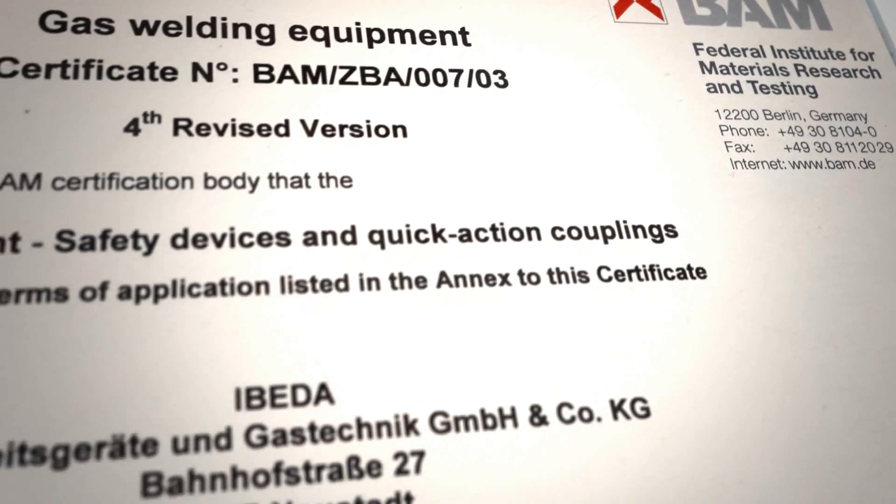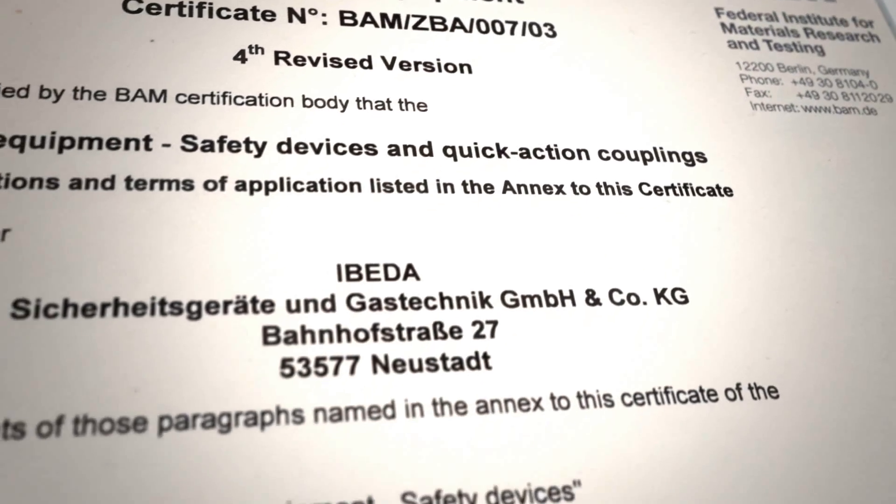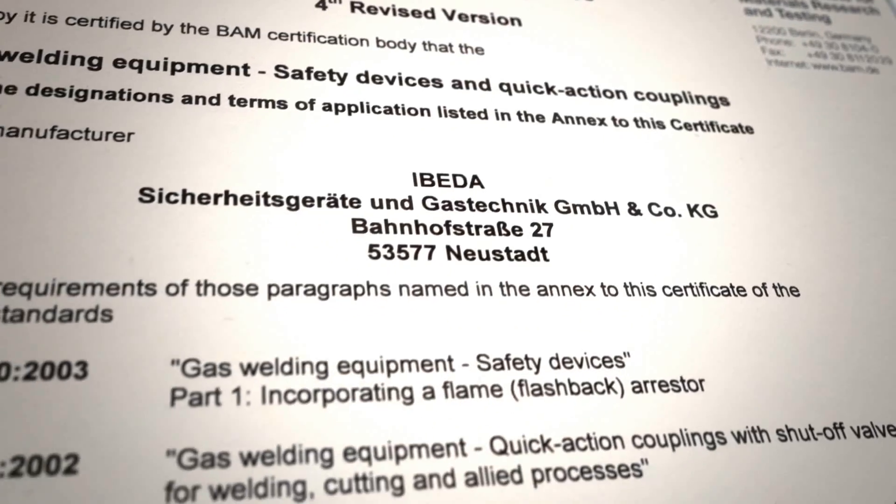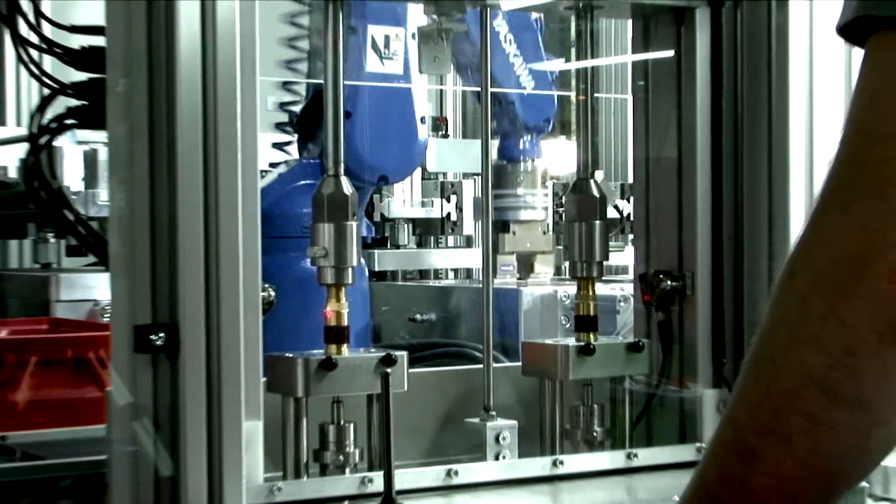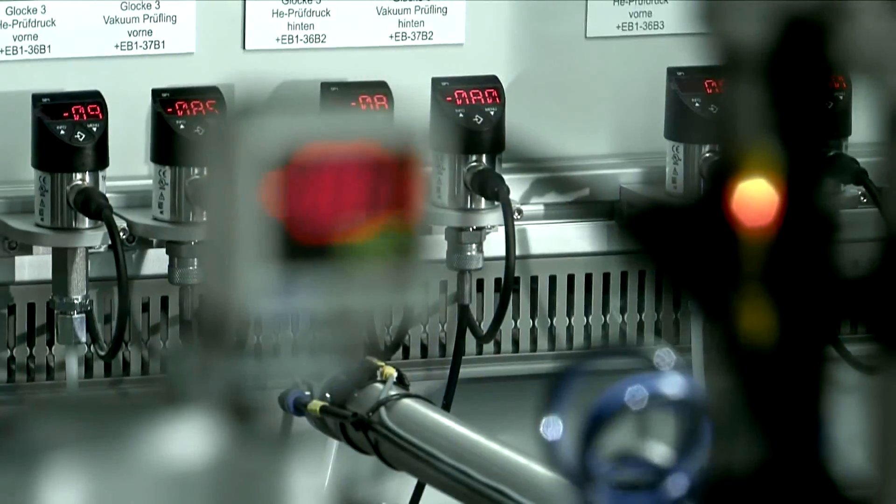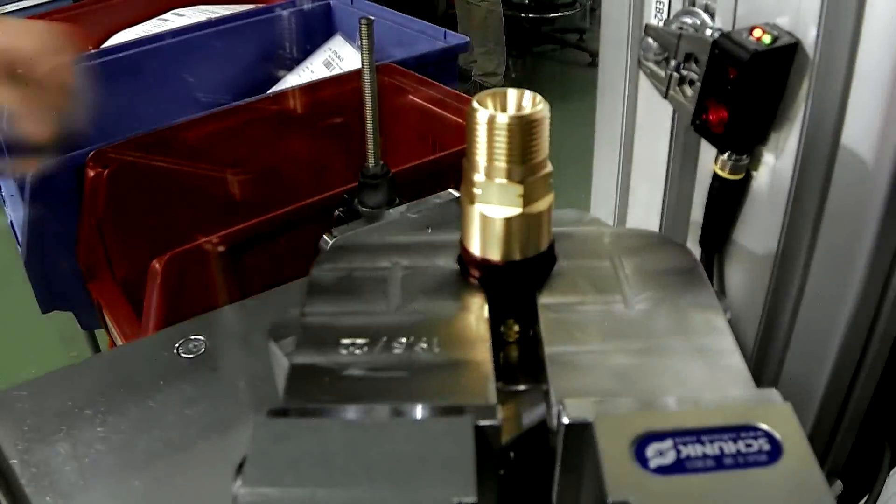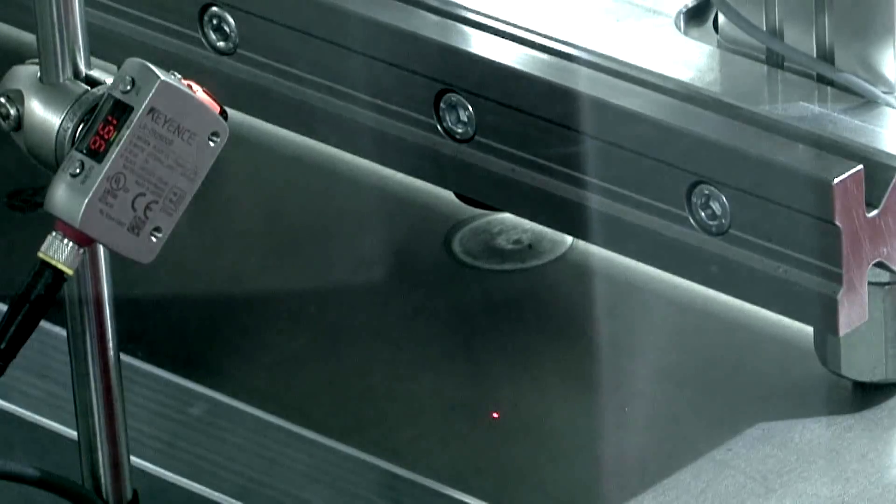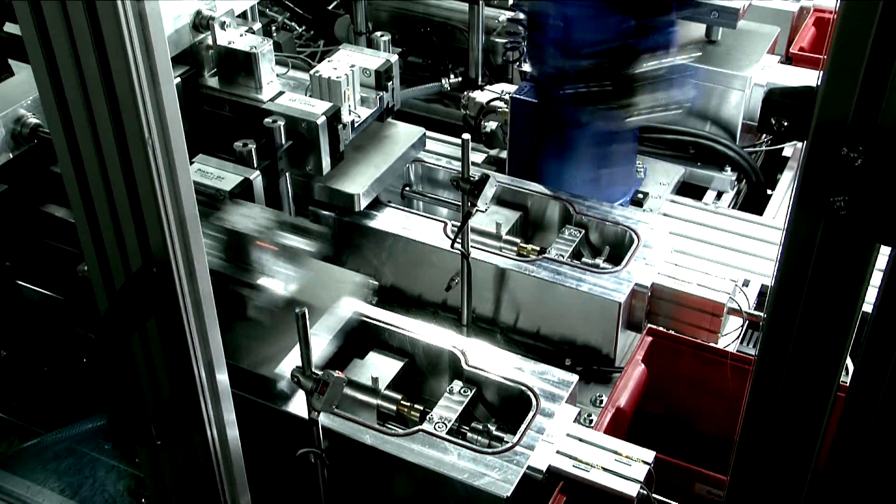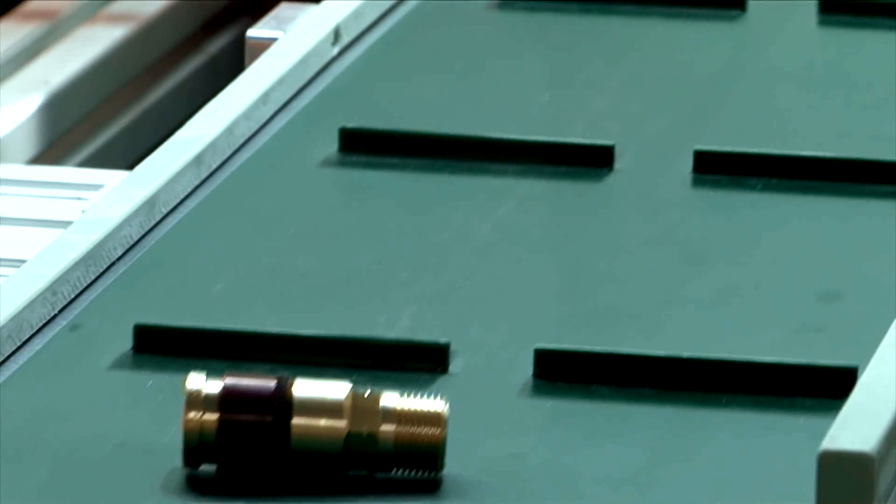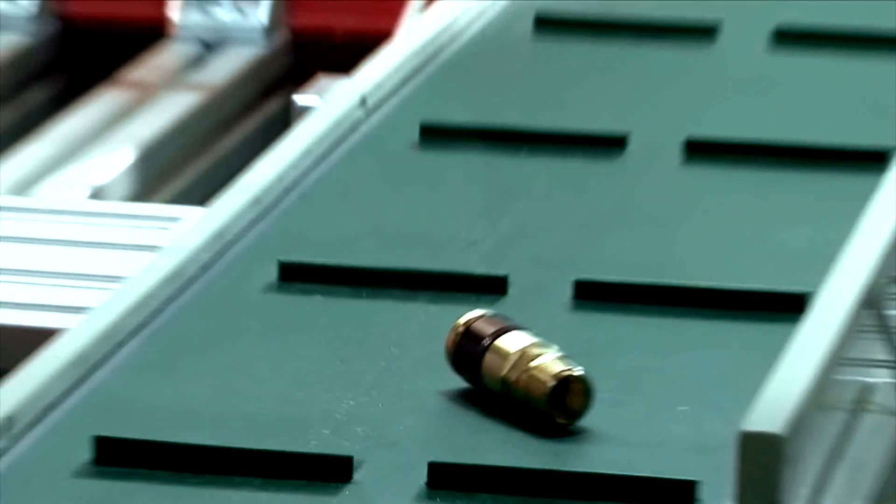EBITDA gas hose couplings are tested by the Federal Institute for Materials Research and Testing, BAM, and are 100% tested. By means of a helium vacuum leak test procedure that is carried out in both the coupled and uncoupled state at maximum operational pressure, it can be ensured that the connection between the coupling body and the coupling pin as well as the gas cutoff valve is gas-tight.